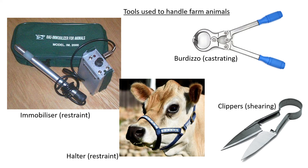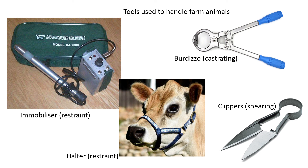At the top right, we have the bedizzo, used for castrating cattle — not sheep, as it's too big to get underneath the body of a sheep. For sheep, we normally use plastic bands placed around the testicles, or around the tail to dock it. That is the last slide and the end of this lesson.